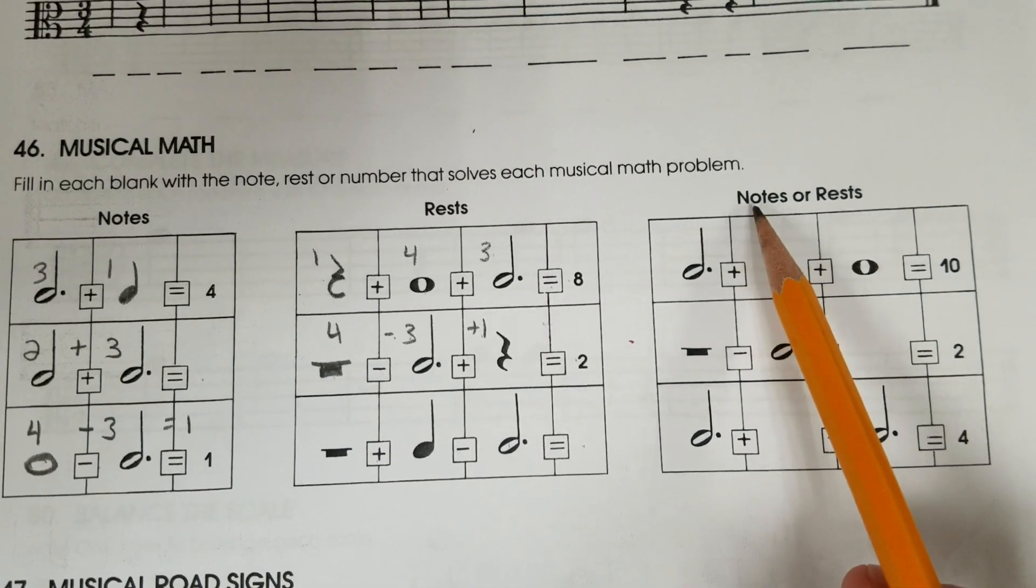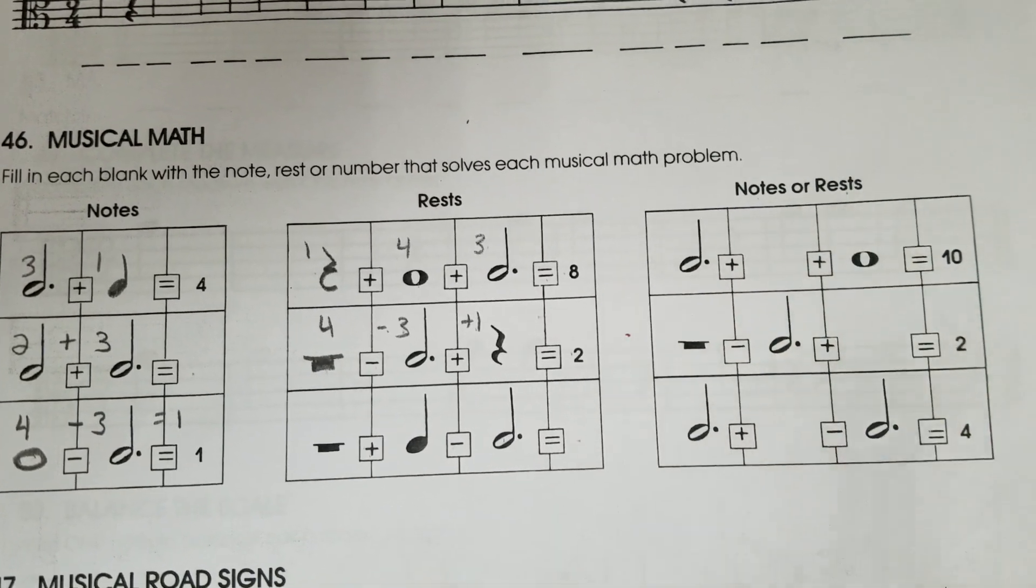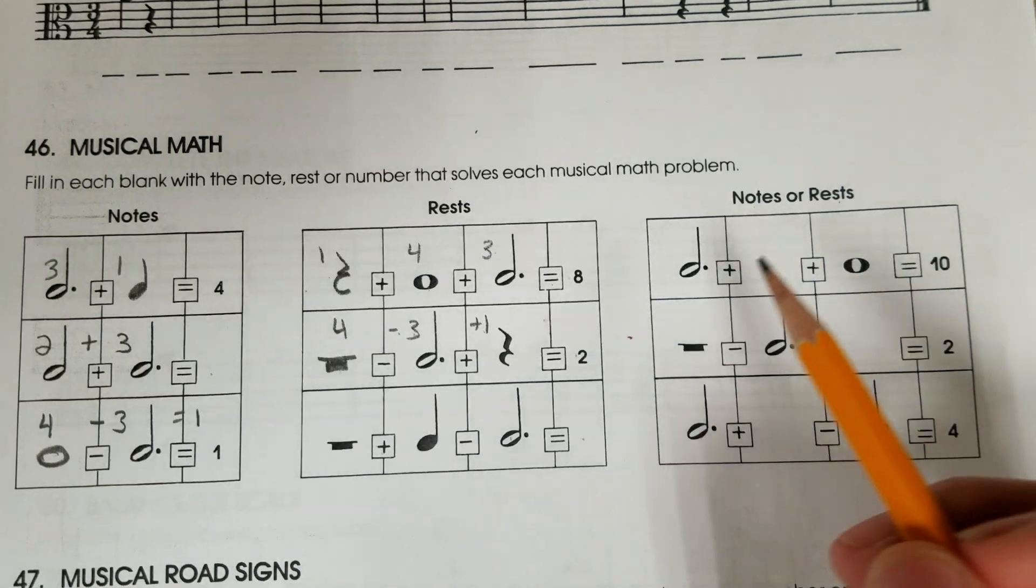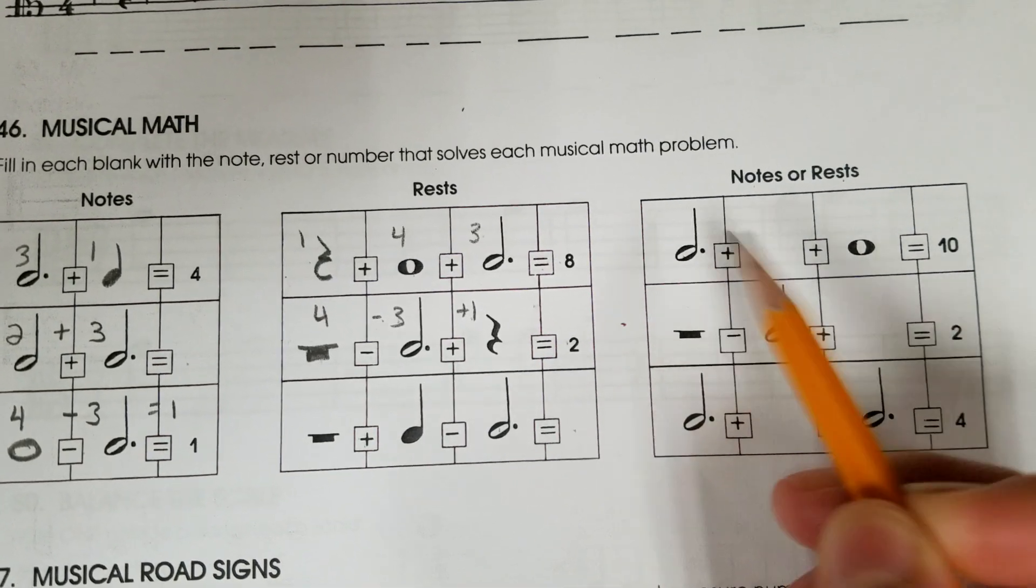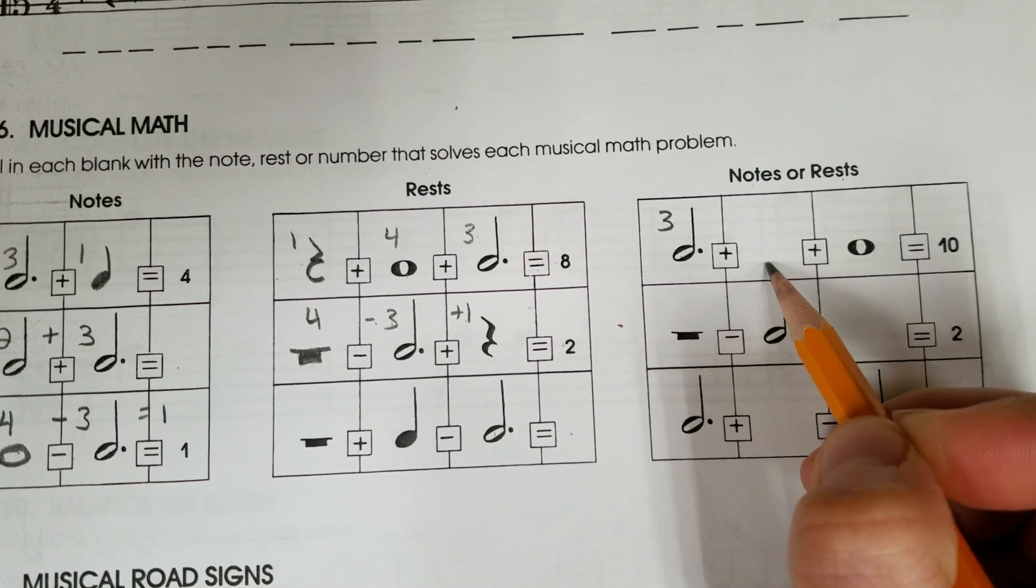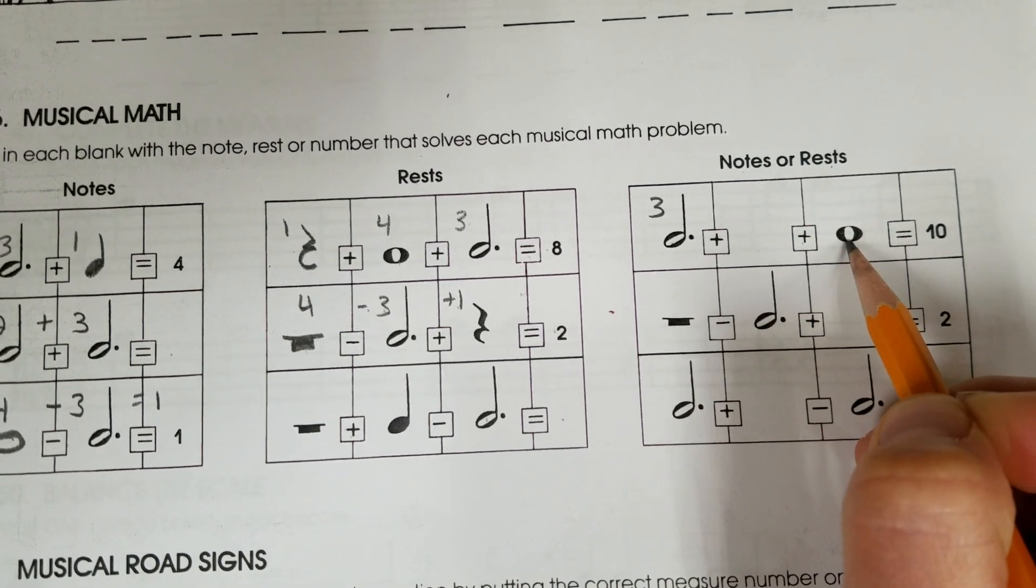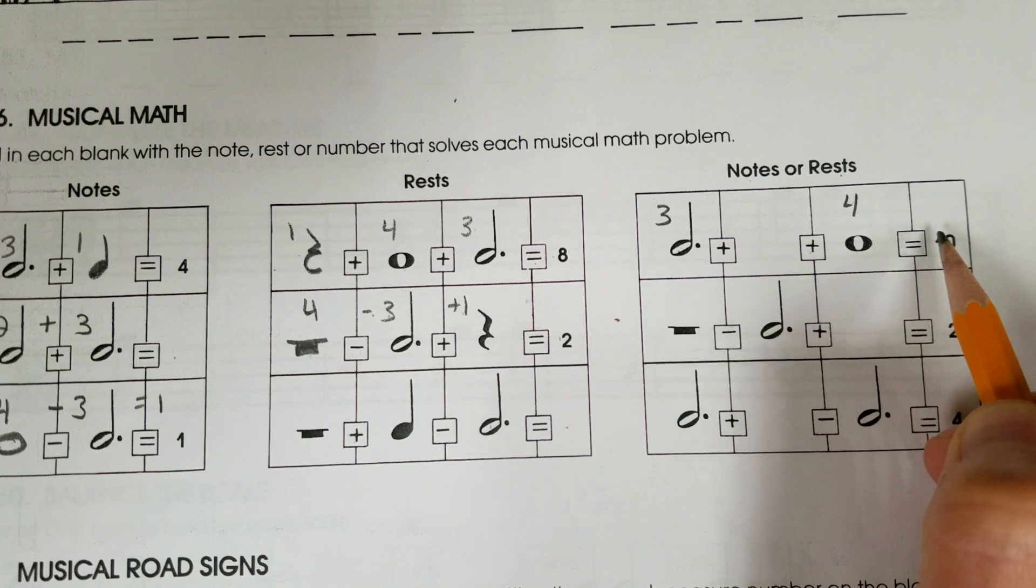In the final set, you can choose whether to use a note or a rest to solve the problem. Dotted half note is 3. 3 plus what, plus a whole note is 4, equals 10.